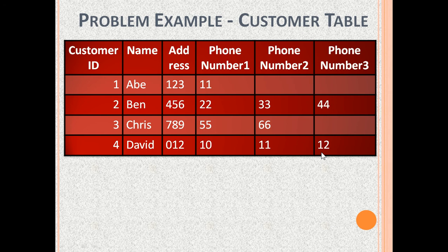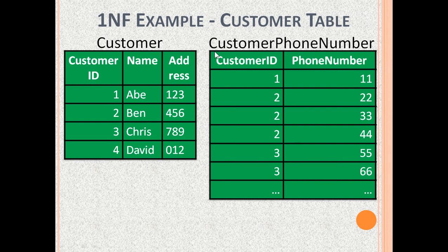The solution is to have a separate table for phone numbers. In order to convert the customer table to first normal form, it is needed to have two tables: a customer table with columns customer ID, name, and address, and a customer phone number table with columns customer ID and phone number. Now, a customer can have no phone numbers, one phone number, or more than one phone number.